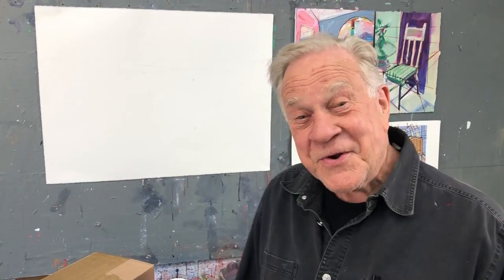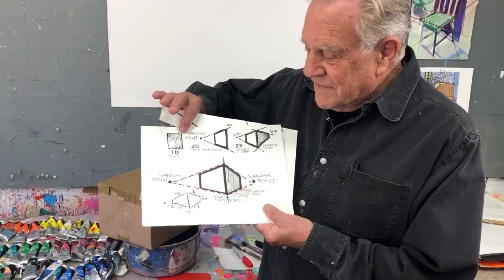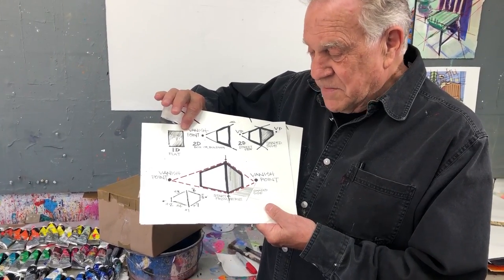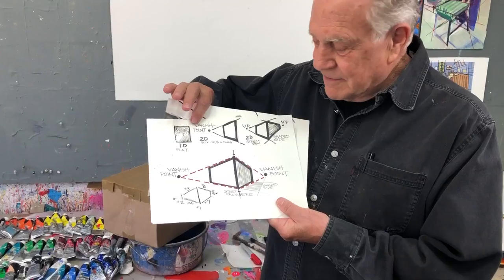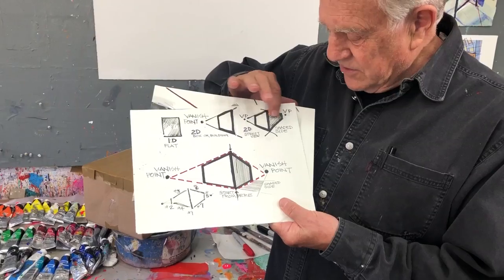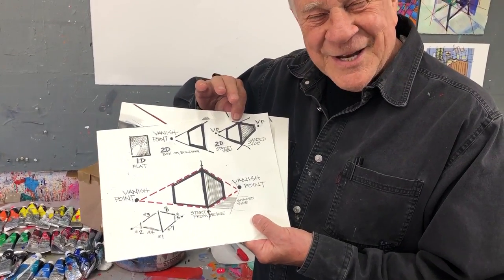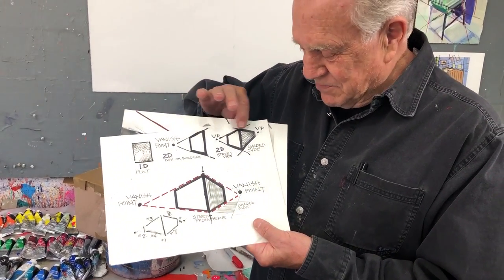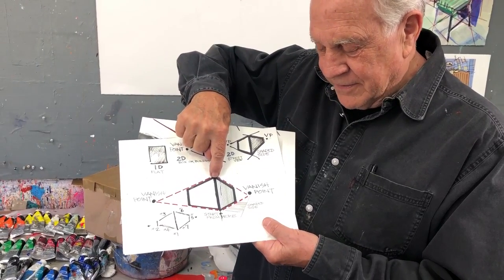Welcome back to another Bob Blast. I'm Bob Burridge and this one is all about painting the illusion of depth perspective. This is actually part two of a series. The last one was about different kinds of perspective points — one dimension is flat with no perspective, then we talked about a vanishing point where lines go to a single point, like standing at a street corner looking at a tall building with two vanishing points.